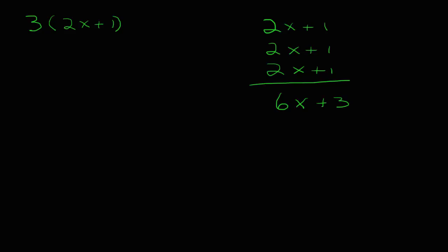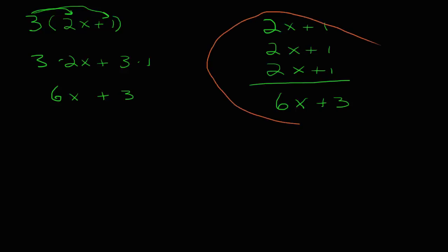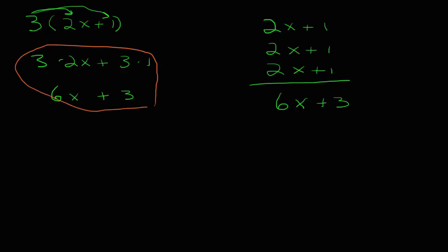Now to do that in a shorthand method, what we do is take the number and its sign and multiply it by everything on the inside. So we're going to take the 3 and multiply it by 2x — that's 3 times 2x — then add that to 3 times 1. So now we have 6x plus 3. Notice that we ended up with the same answer both ways: whether we used repeated addition or the distributive property, we get 6x plus 3.